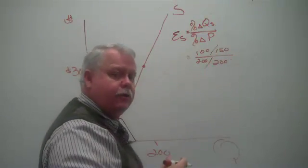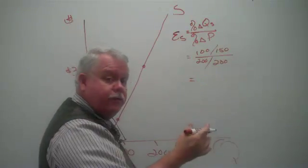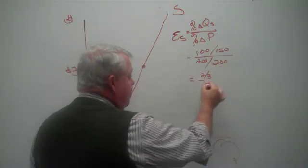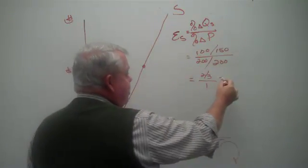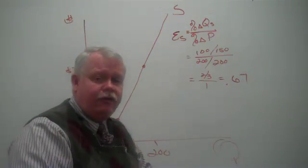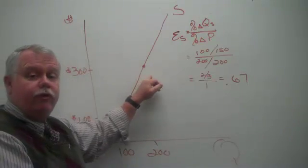Hey, this is looking kind of neat, simple. When we do this, we get 100 over 150 is 2/3. 200 over 200 is 1. And so our coefficient here is 0.67. That's the price elasticity of supply between these two prices, between these two points on the supply curve.